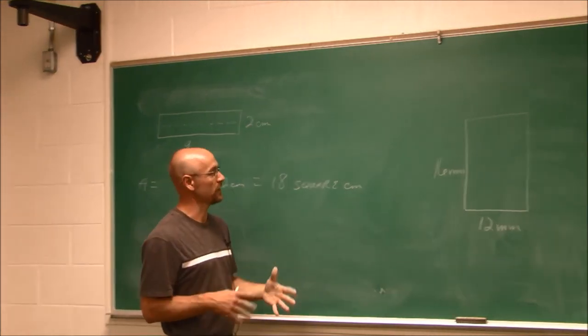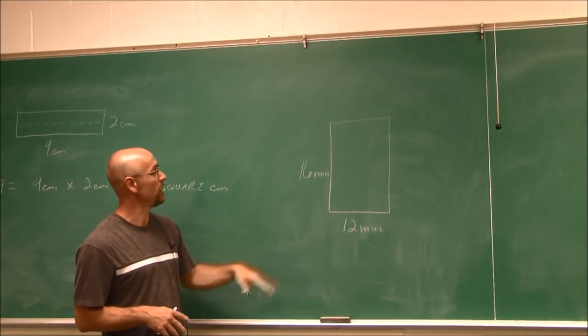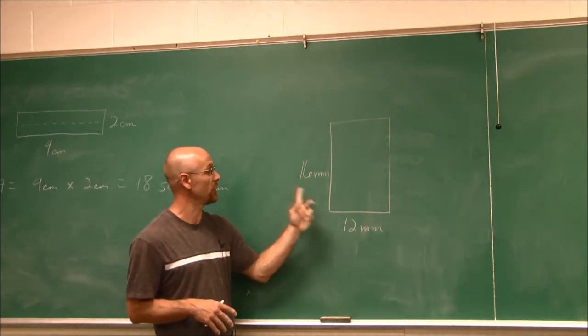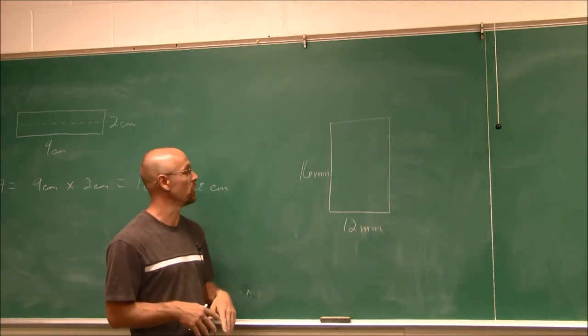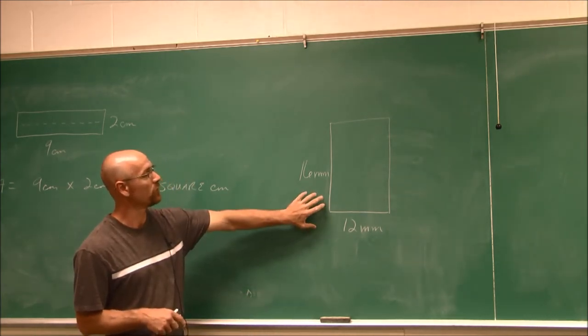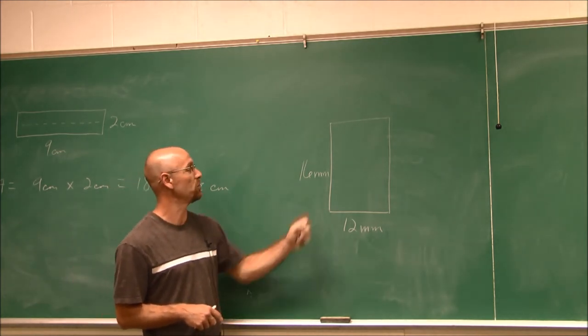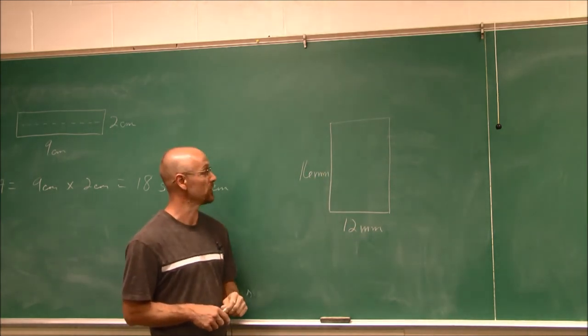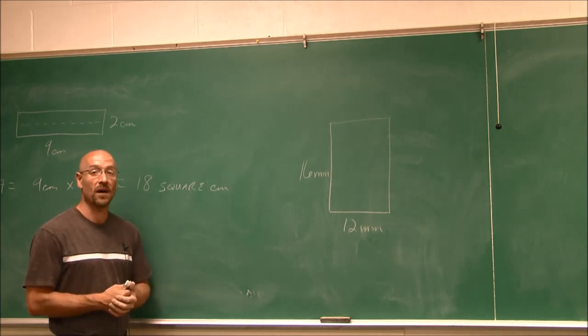So for your practice, try to find the area of this. We have a rectangle with 16 millimeters and 12 millimeters as opposing sides here. So you can determine which one you want to denote as your length, which one's your width. That's really for you to decide. But go ahead and find the area of this particular rectangle. And always be aware of units. The units here are millimeters. MM is that abbreviation. So give that a try. And I appreciate you watching. Thank you.